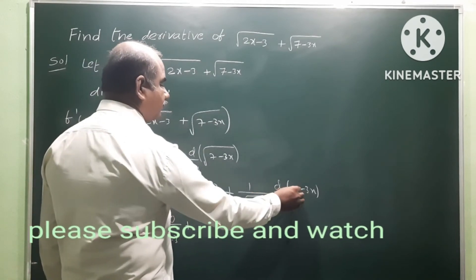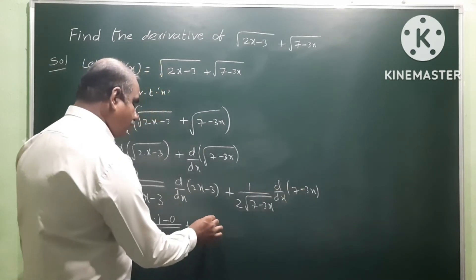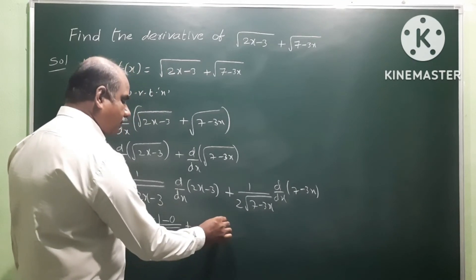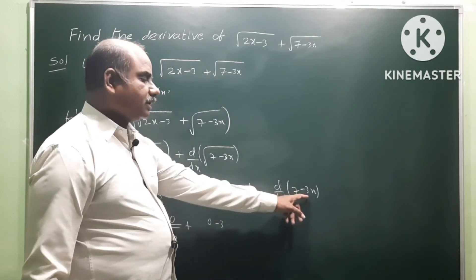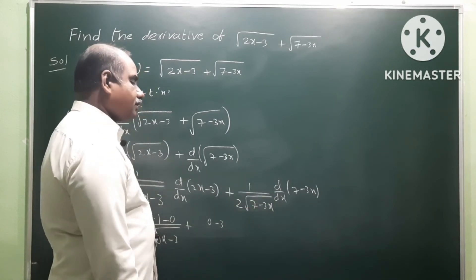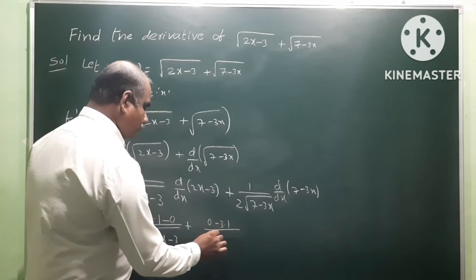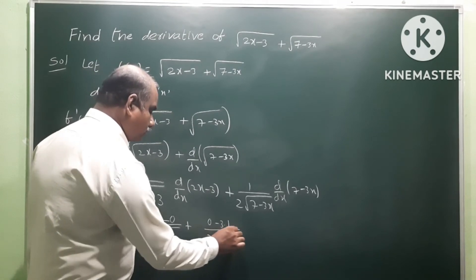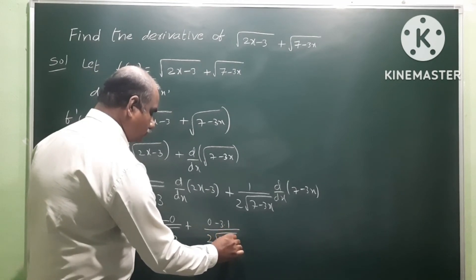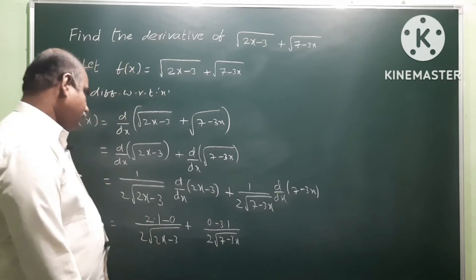Derivative of 7, which is constant so derivative of constant is 0, minus 3x where 3 is the constant, so derivative of x is 1. So that is 0 minus 3 times 1, which is negative 3, divided by 2 root of 7 minus 3x.